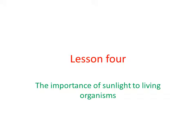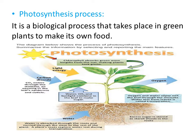Let's start with Lesson 4, which talks about the importance of sunlight to all living organisms. The plant needs sunlight to carry out a very important process called photosynthesis, during which the plant makes its own food and also produces oxygen. The plant takes water and minerals from the soil through its roots, takes carbon dioxide from the air and sunlight, and mixes these components to form its own food and produce oxygen.